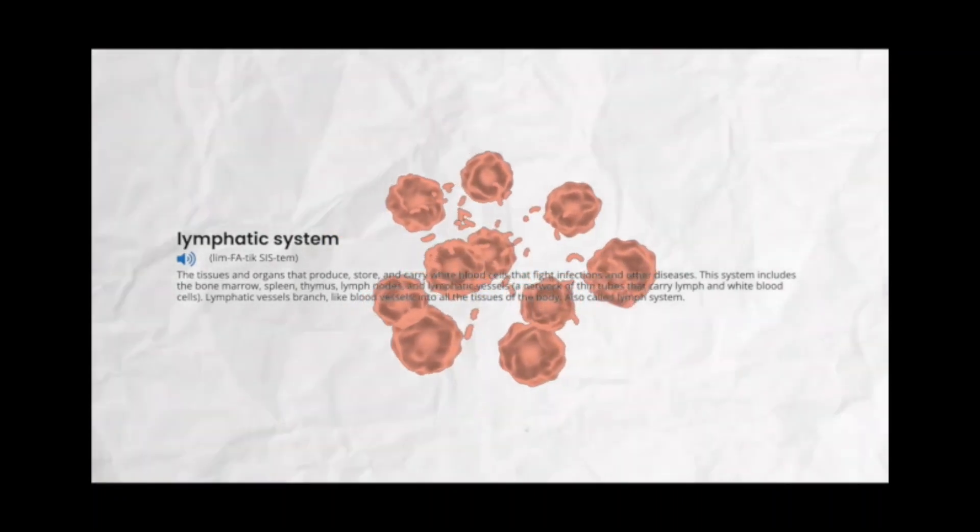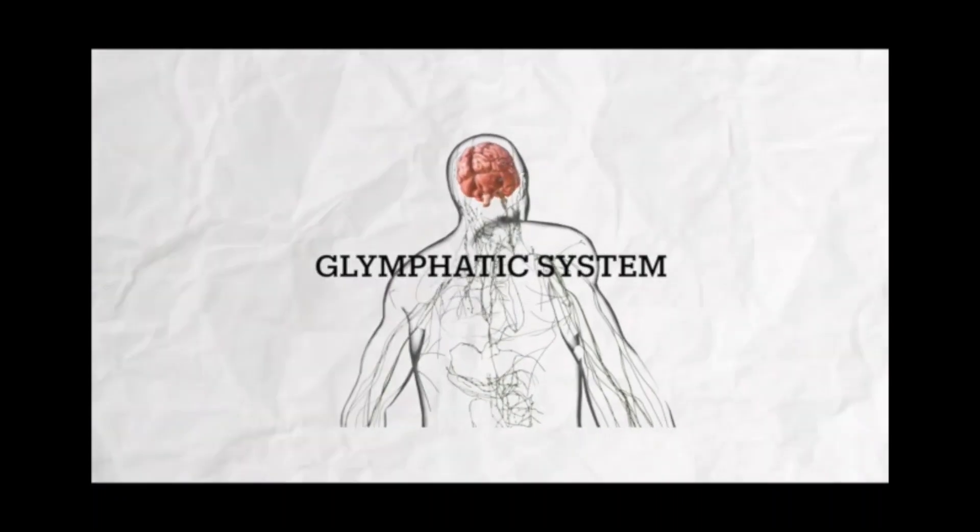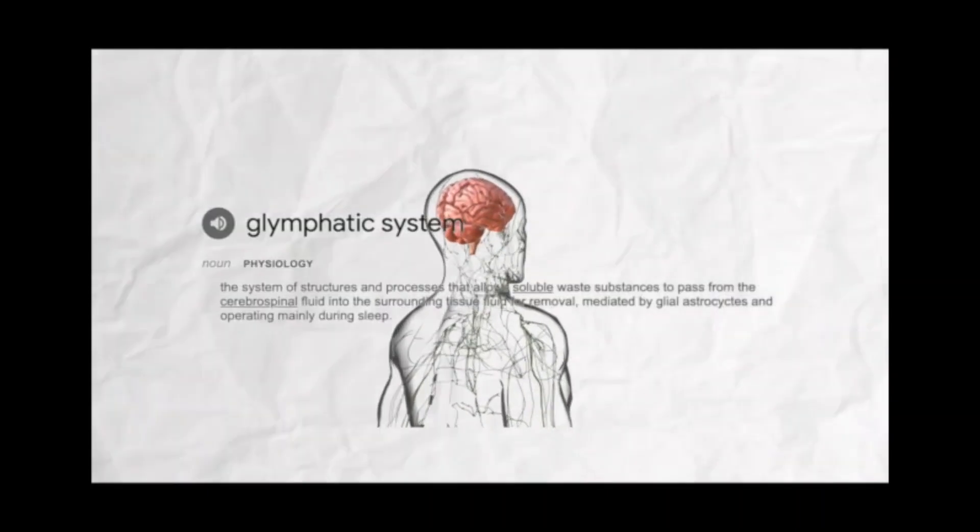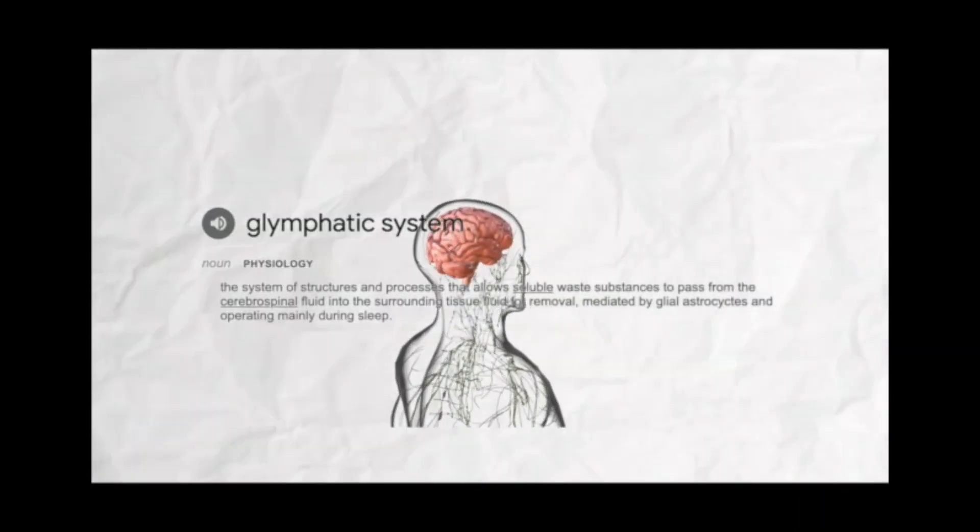But there's a slight variation in the brain. The glymphatic system is similar to the lymphatic system, but has a G in front of it, which stands for its glial cell dependency.